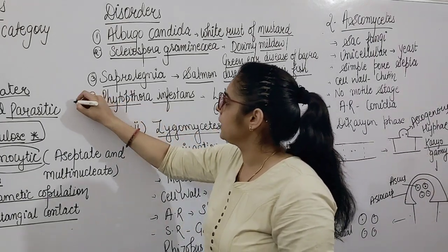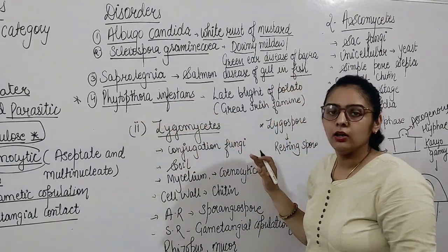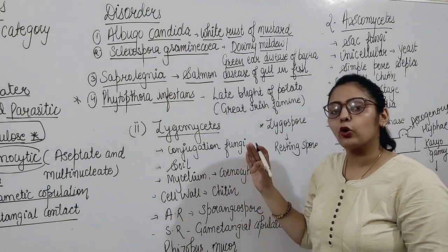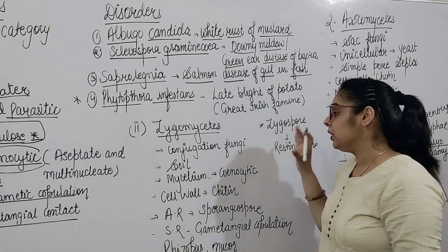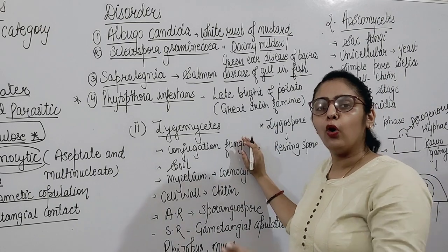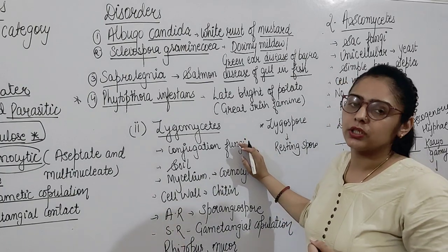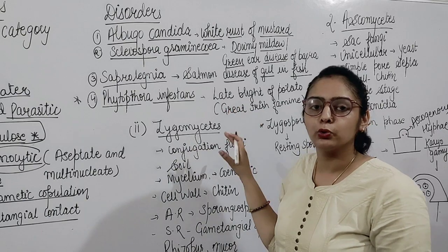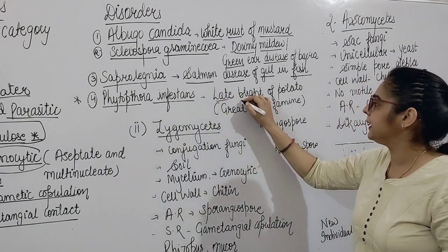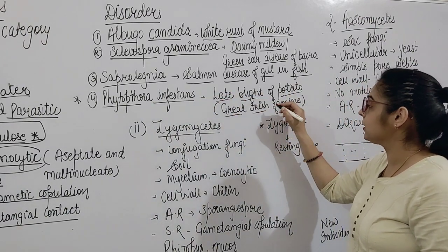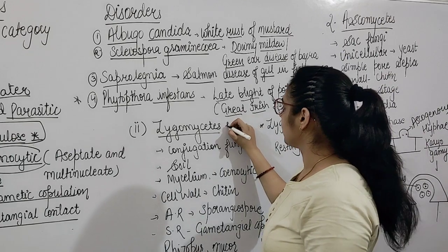The last and most important example — because this question comes in exams — is Phytophthora infestans, which causes late blight of potato. Besides NEET, if you give other competitive exams in general science or basic biology, you should know that Phytophthora infestans causing late blight of potato is also known as the Great Irish Famine.